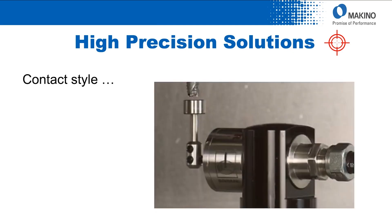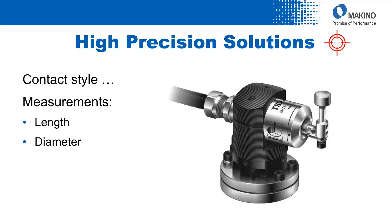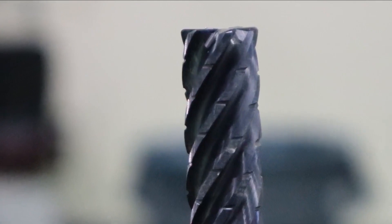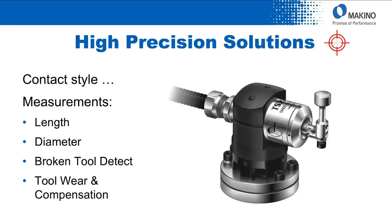What measurements can you get from the standpoint of this high precision data? With the contact style systems, you're looking at tool length and tool diameter — the two things that immediately pop to mind. Bear in mind that even with the contact style solutions, that tool oftentimes is going to be rotating, typically in the direction opposite of your cutting process. So with the tool rotating, you have the dynamics to look at multiple flutes on an end mill to really get that diameter composite from a dynamic standpoint. Broken tool detection certainly comes into play, as well as the ability to use the very fine data collected to compensate for tool wear as an overall process control.